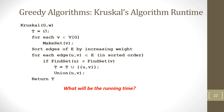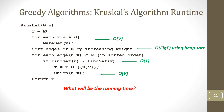So what is the complexity of Kruskal's algorithm? The for loop for Make-Set takes O(V) operations. Sorting E edges takes O(E log E) using heap sort. Checking if both endpoints belong to the same set takes constant time. The Union operation takes O(V), and since this for loop runs E times, the total complexity of Kruskal's algorithm is O(EV).